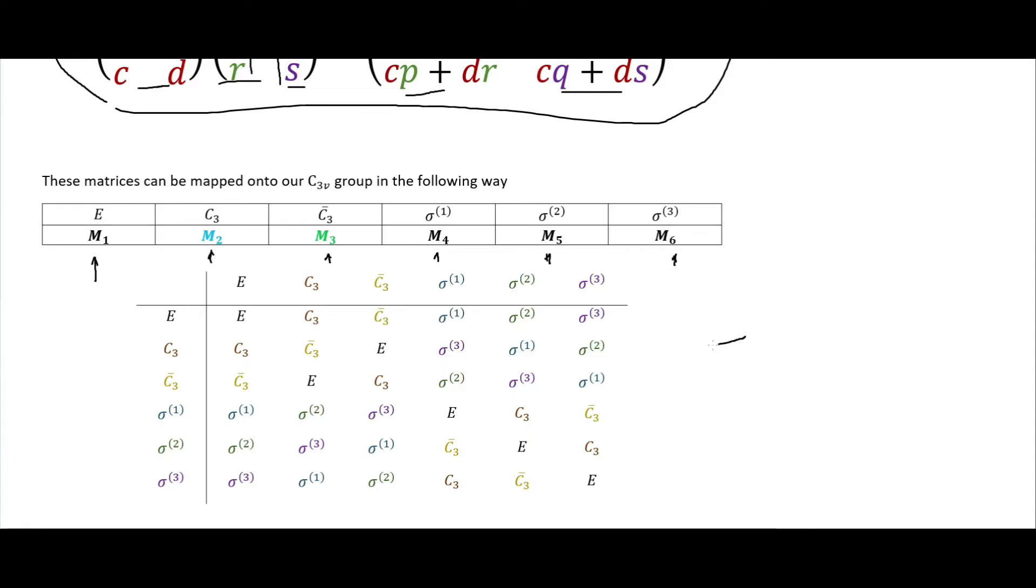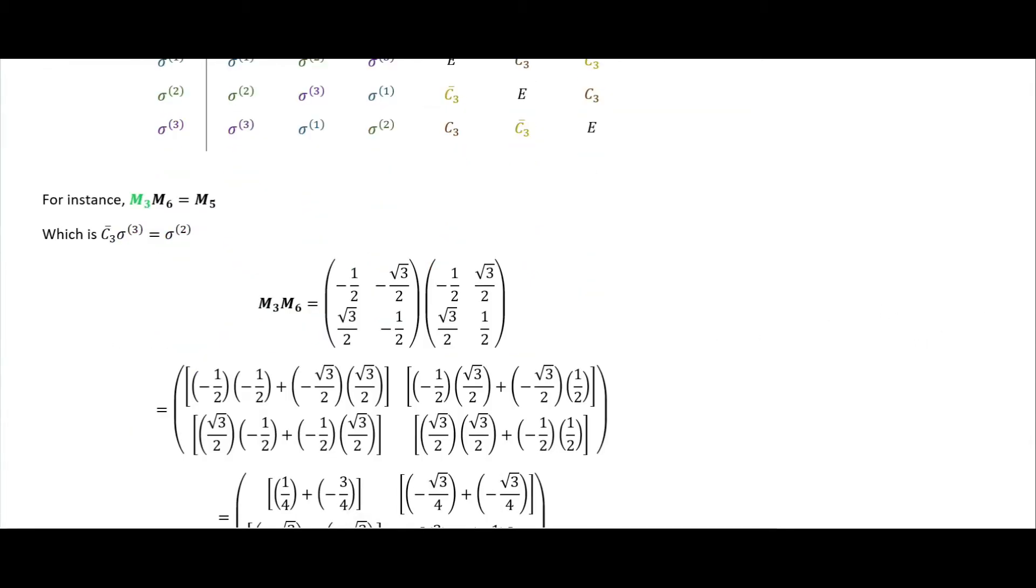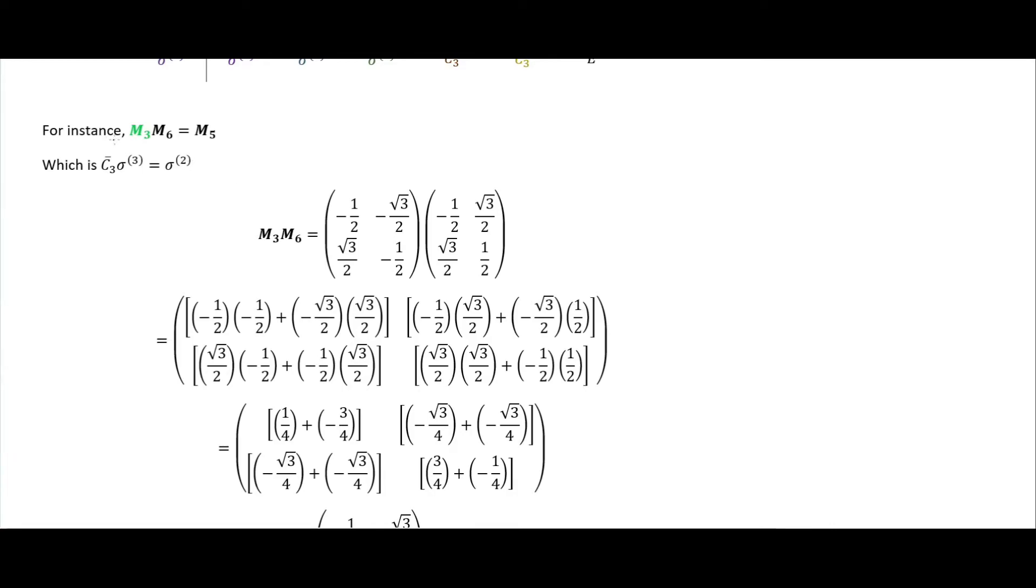The C3V combines in this way, so you could take each of these M sub numbers and replace everything in here with those, and it would actually work out that way using matrix multiplication. That's why I say representation, because using the binary operation with, say, M4 and M5, you'll get the same thing as if you did the binary operation of sigma1 with sigma2. In fact, down here I have an example.